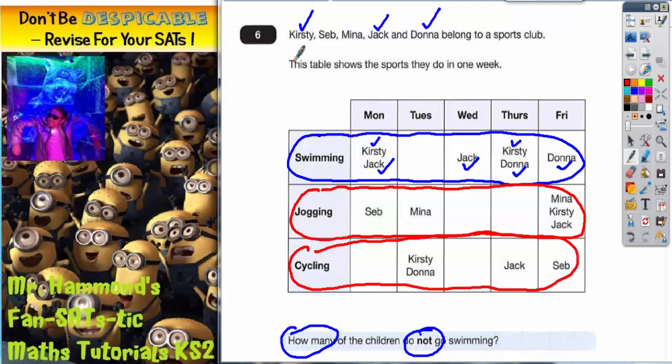So I'm now going to check for Kirsty. Does Kirsty go jogging? Yes, she does. Does Kirsty go cycling on this row? Yes, she does. So Kirsty does do both. So I'll tick her.